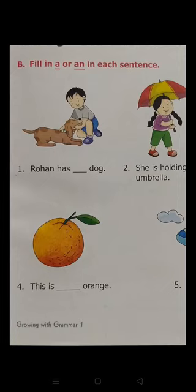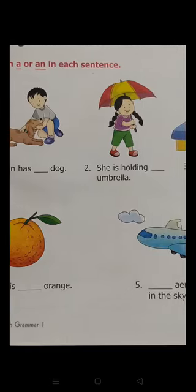Rohan has a dog. We will fill in 'a' there. Rohan has a dog. Next is: 'She is holding ___ umbrella.'